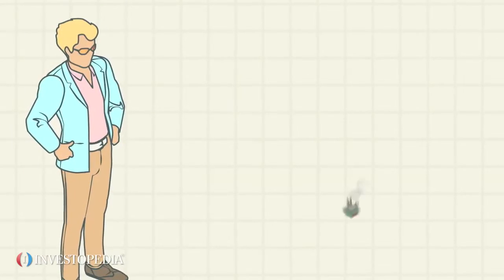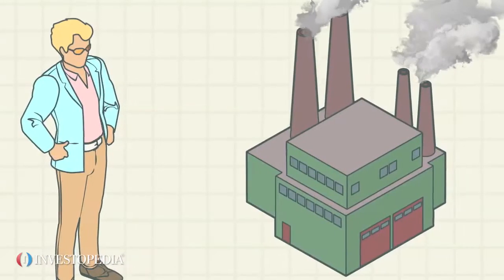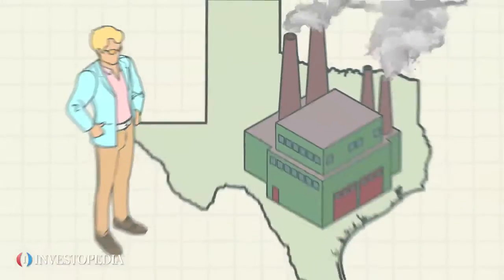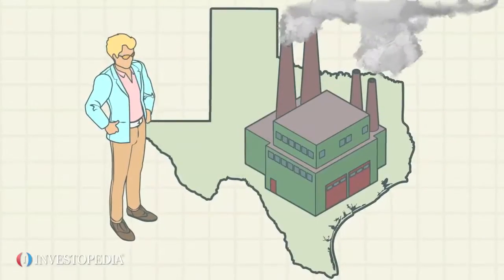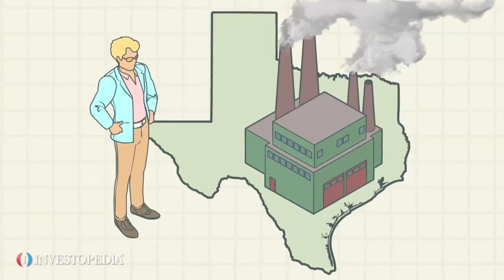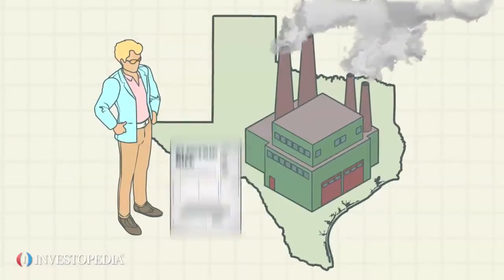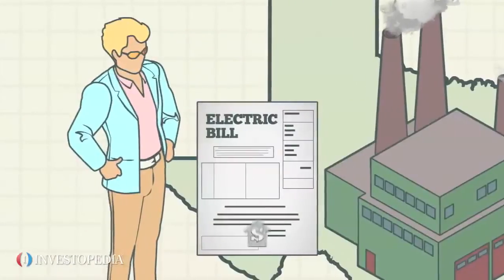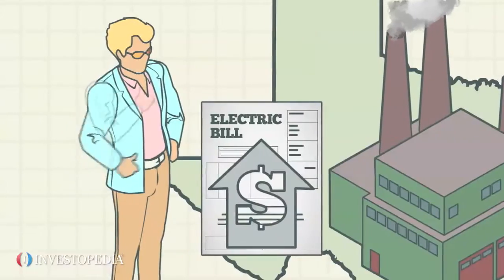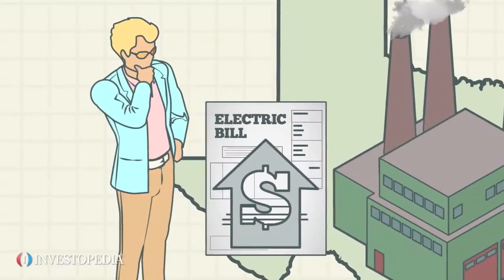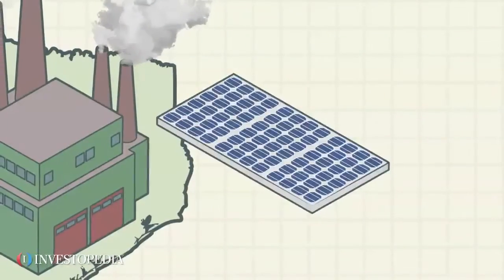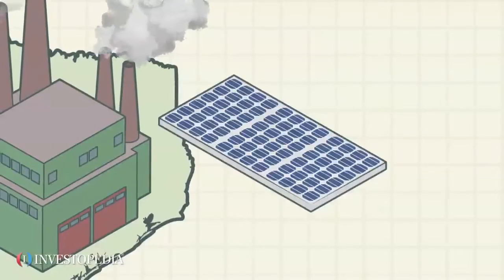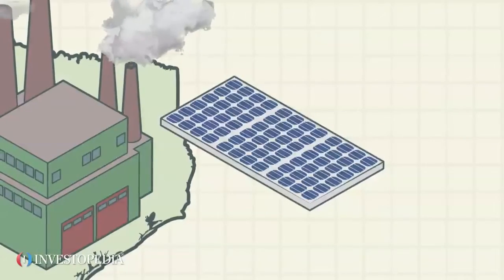Sonny owns a golf cart manufacturing business in Texas. Sonny's business uses a lot of electricity and the monthly electric bill is very high. He wants to reduce his bill and is thinking of installing solar panels on the roof of his manufacturing building.